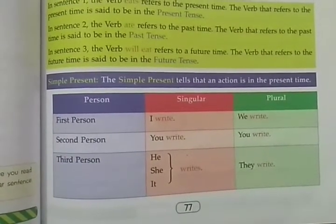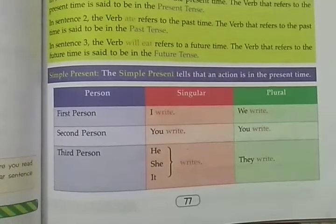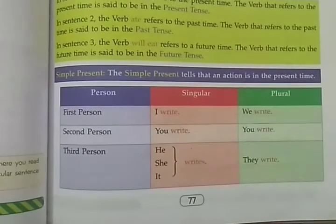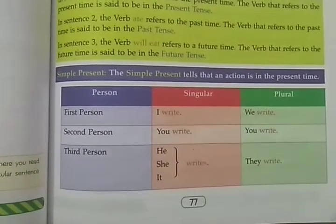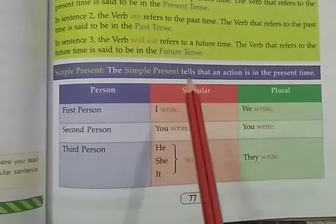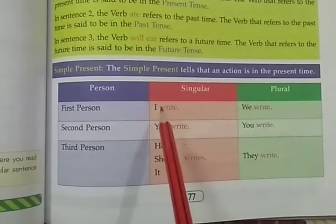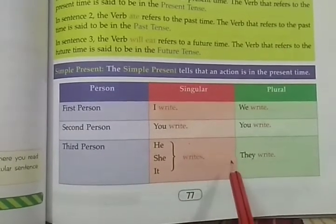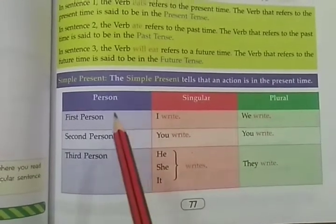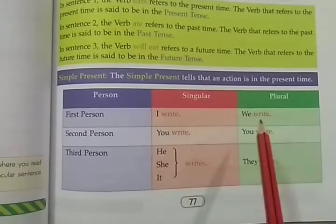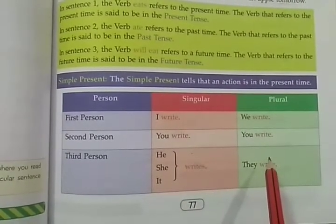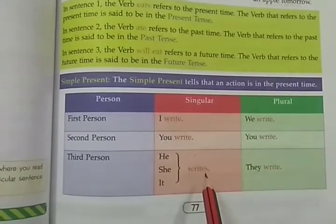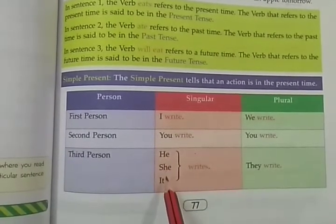We will learn about simple present tense today. The simple present tense shows that an action is in present time. Simple present tense ہمیں یہ بتاتا ہے کہ action present میں ابھی ہوا ہے. Person کے according یہ divided ہے، آپ کو table given ہے singular and plural. First person: I or We. Second person: You. Third person: He, She, It, They. Plural forms are also given. You can see: write, write, write — it means the first form of verb is used with I, you, we, and they.